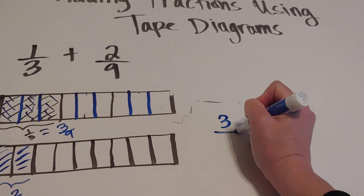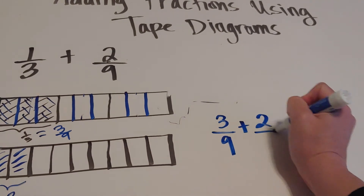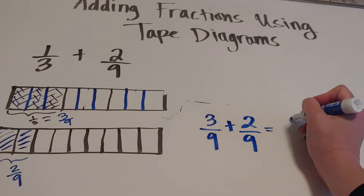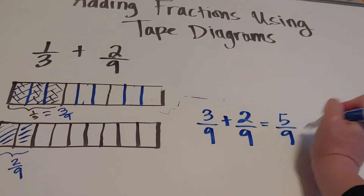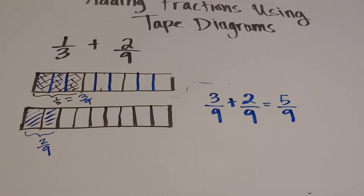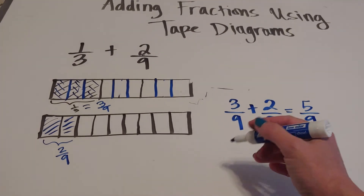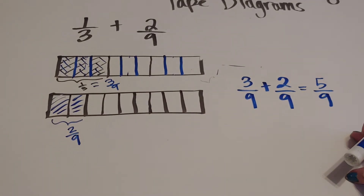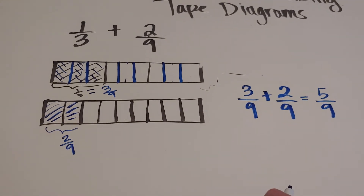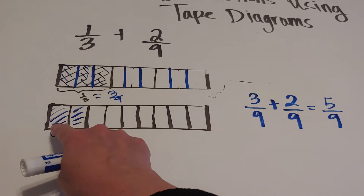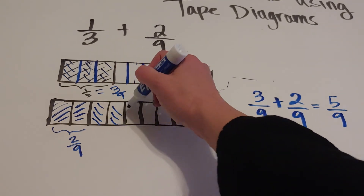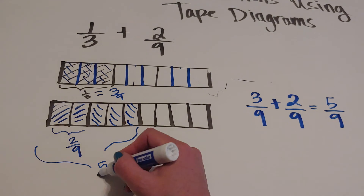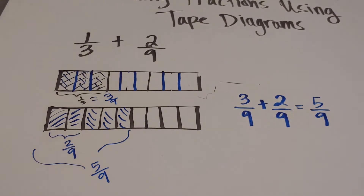So I want to do three-ninths plus two-ninths. Three-ninths plus two-ninths is five-ninths — not five-eighteenths. You might want to have students shade them all on one diagram. If I have two and then three more, I can see this is five — five-ninths.